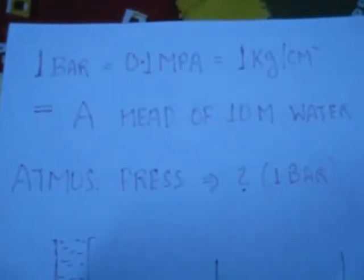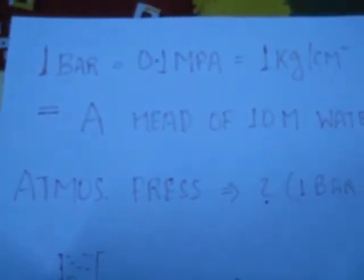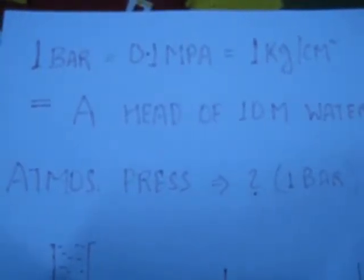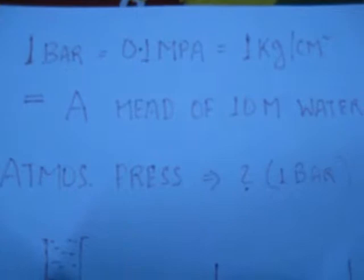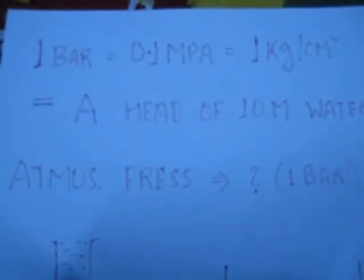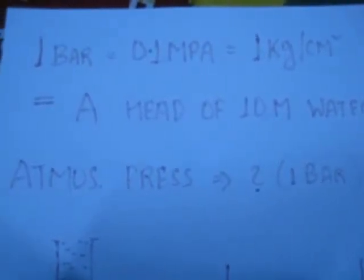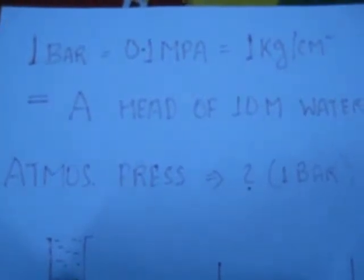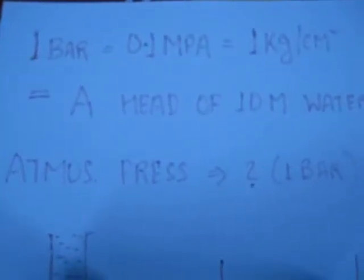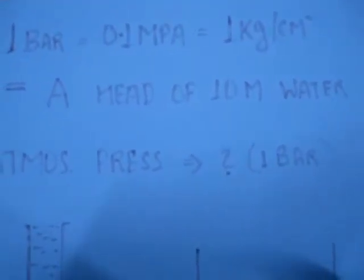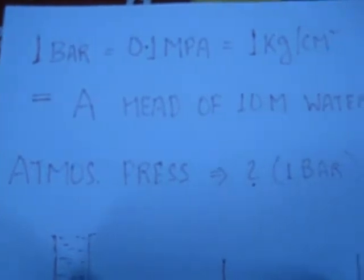First of all, look at some basic things: 1 bar equals 0.1 megapascals, that finally equals 1 kg per centimeter square. That means that a load of 1 kg over a surface area of 1 centimeter square equals the atmospheric pressure that is equal to 1 bar, and which is also equal to a head of 10 meter water. Now atmospheric pressure is equal to 1 bar.